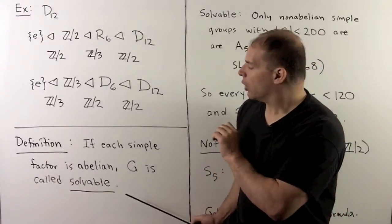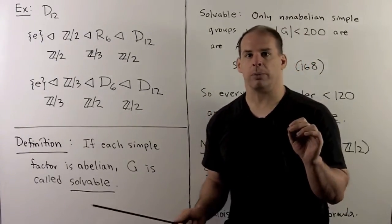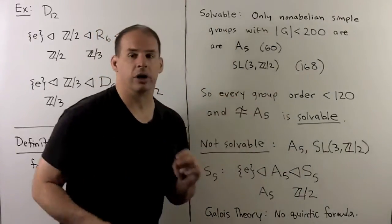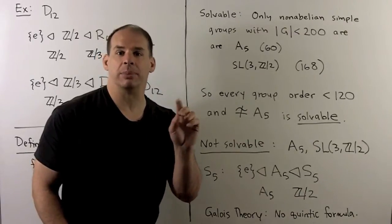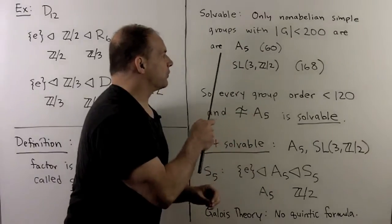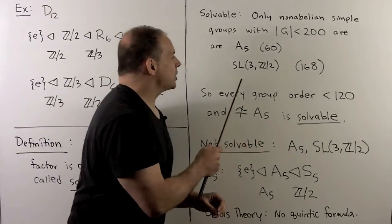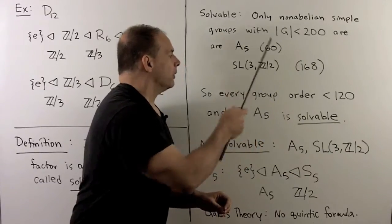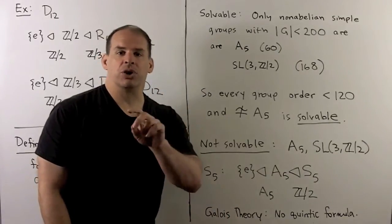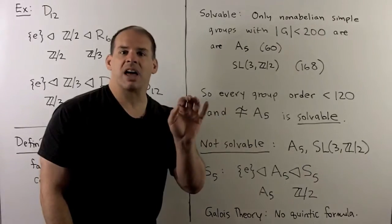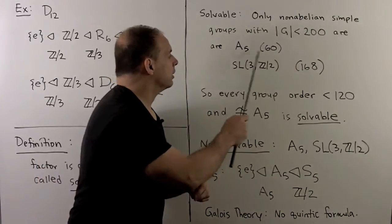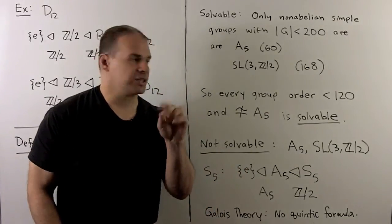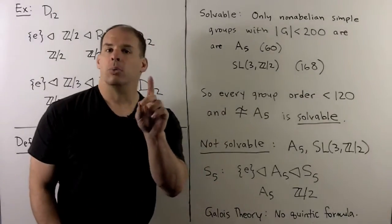So the question is, what does it take for our group to not be solvable? Well, if we consider groups of order less than 200, there's only going to be two classes for non-abelian simple groups. At 60, we'll have the class for A5. And at 168, we'll have the class for SL3Z2. That's going to be a matrix group. Now, what this means, for instance, if we consider groups whose order is less than 120, the only way we're not solvable is if we're looking at A5.